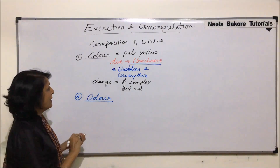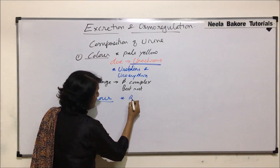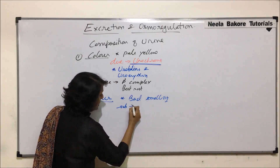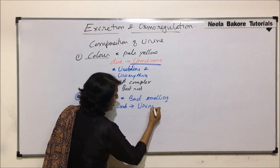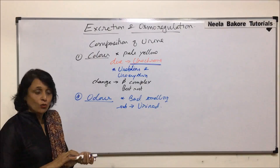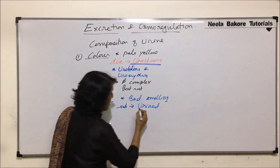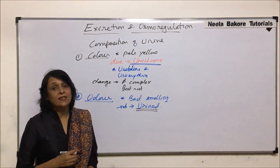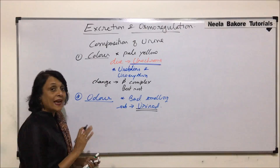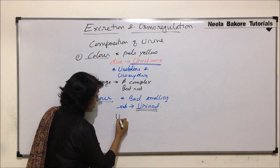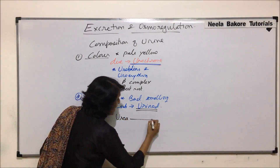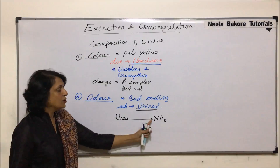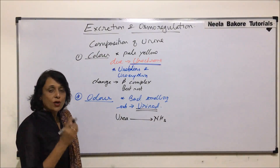The second property is smell or odor. Urine has a peculiar bad smell. This bad-smelling substance is called urinoid. Very soon urine starts smelling very strongly, and that strong smell is due to urea degrading into ammonia.